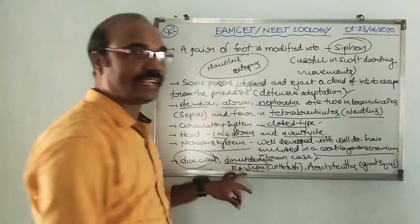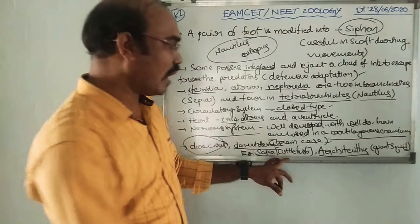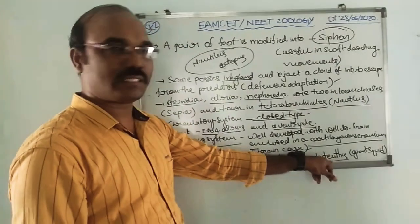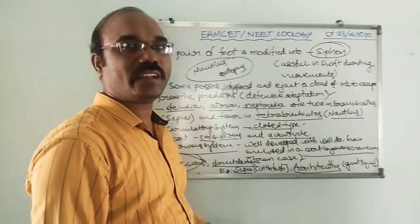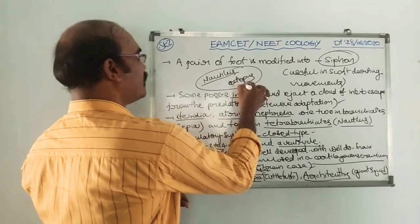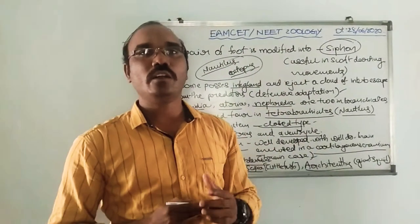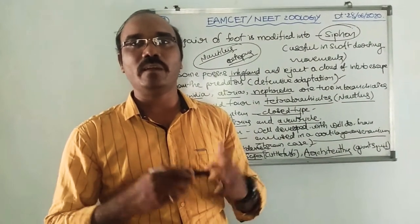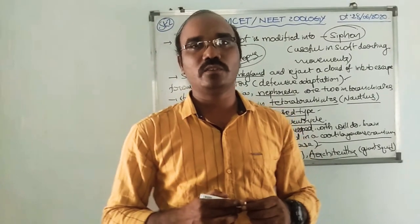Some examples of Cephalopoda: Sepia is the cuttlefish. Architeuthis means giant squid — it is the largest living invertebrate. Nautilus and Octopus are also examples; octopus is also called the devil fish. If you like my videos, share them with your friends, comment, and subscribe to the SK Zoology channel. Thank you students, I love you.